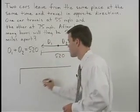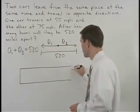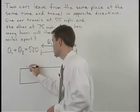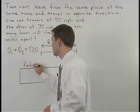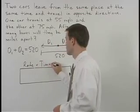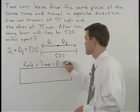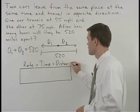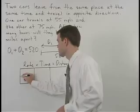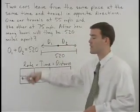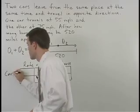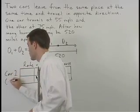Remember from your coin problems that the formula goes across the top of the chart: rate times time equals distance. Down the left side we have our two cars, Car 1 and Car 2.